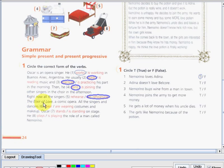The elixir of love. A comic opera. All singers and dancers are wearing, very good, costumes and makeup. Oscar. Very good. So, very good. So, it's standing on stage. He, very good, is playing the role of a man called Nemorino. Wow. That's great.